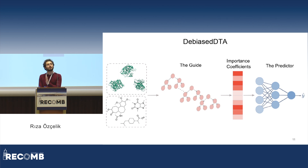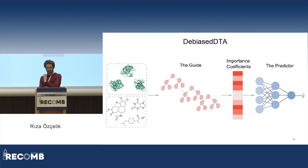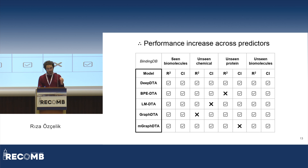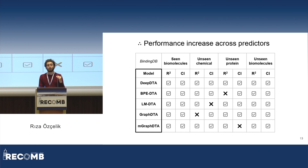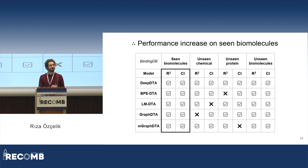Moving on to experiments: we tested across 20 test sets of the BindingDB dataset and found that on 80% of the test sets, Bias DTA can actually help improve model performance — very good and welcoming results. Perhaps even more importantly, the performance increase was consistent across predictors: whether the model uses graph neural networks, fully connected neural networks, or CNNs, the performance increase was observed, meaning that Bias DTA is model- and representation-agnostic. We also observed that performance improvement appeared not only on the unseen part of test sets but also on seen biomolecules, suggesting Bias DTA overall improves model performance.